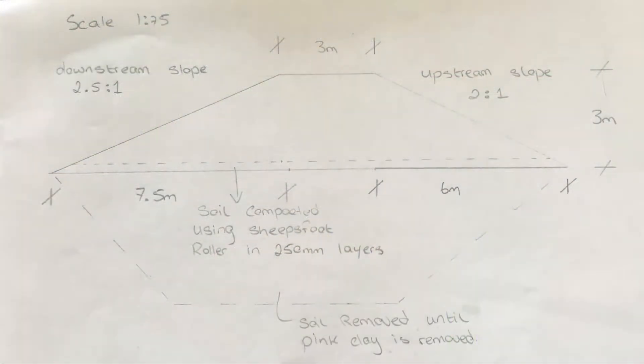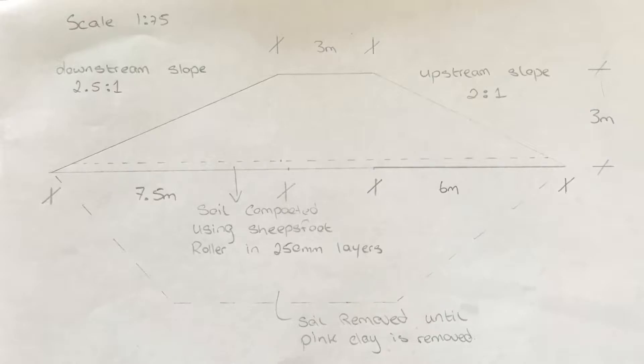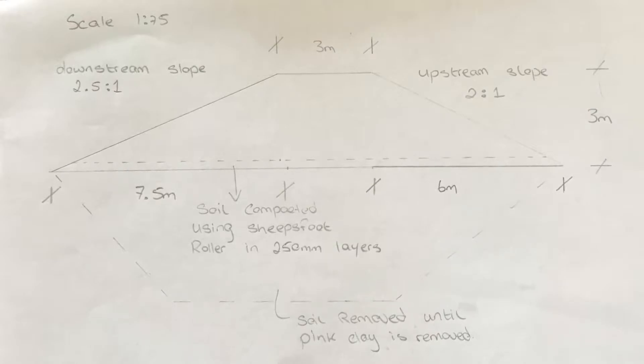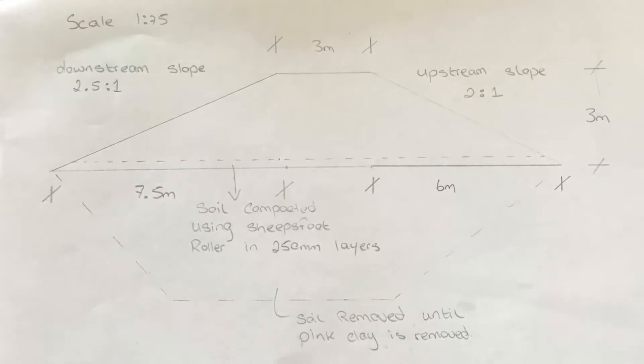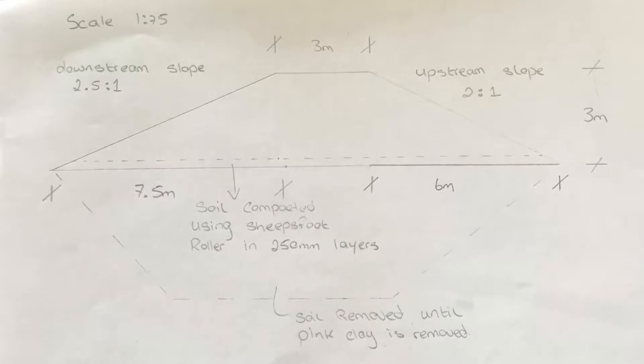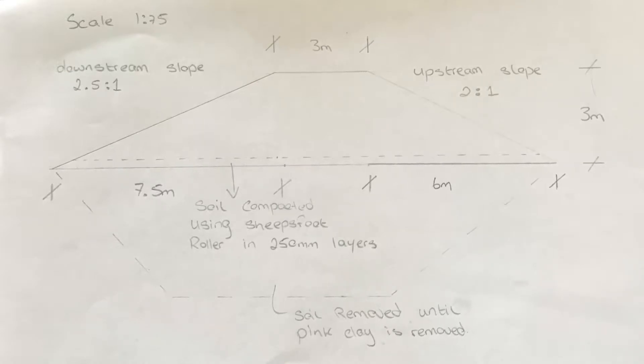For a homogenous clay, we found the slope stability of a dam under 15m high to be a ratio of 2 to 1 on the downstream slope and 2.5 to 1 for the upstream slope.